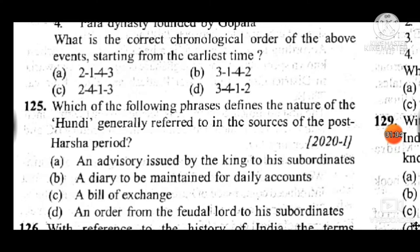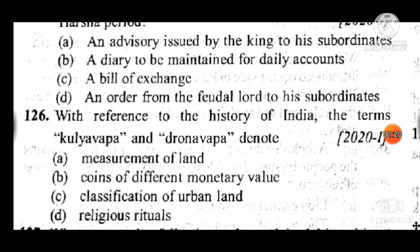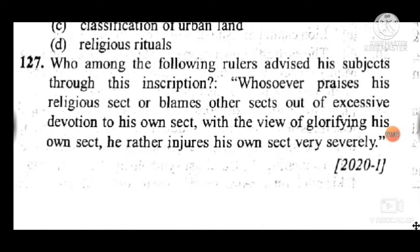Question 125: Which phrase defines the nature of the Hundi generally referred to in post-Harsha period sources? Answer is C — a bill of exchange. Question 126: The terms 'Khalivapa' and 'Ashtavapa' denote — answer is A, measurement of land. Question 127: Who among the following rulers advised his subjects through an inscription: 'Whosoever praises his own sect or blames other sects, out of excessive devotion to his own sect, with the view of glorifying his own sect, he rather injures his own sect severely'? Answer is A, Ashoka; this refers to the Abu inscription.